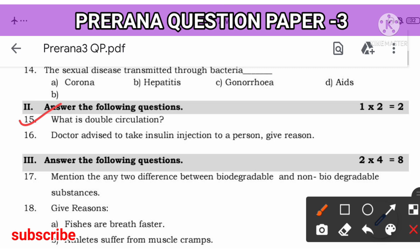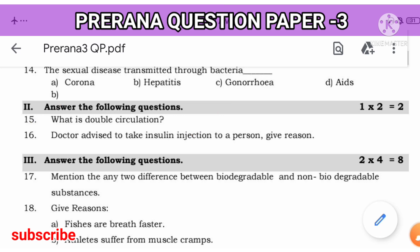You can join to my telegram to know more content about my channel. Next. Doctor advised to take an insulin injection to a person. Why? Because his blood sugar level has increased. So, insulin is advised by the doctor because the patient has diabetes. His blood sugar level is increased. That is why doctor is advising to take the insulin injection. Very simple answers dear students. Understand the question.